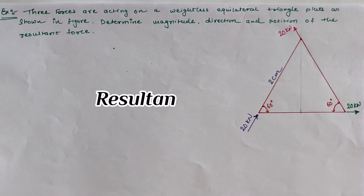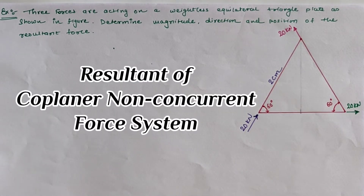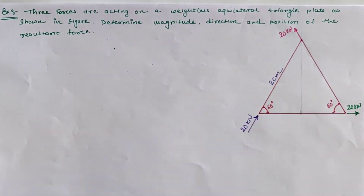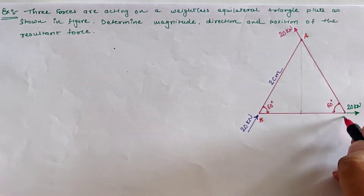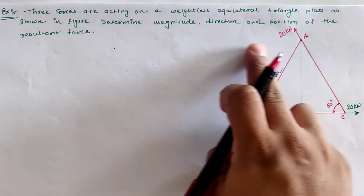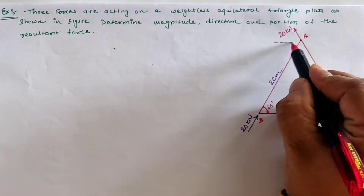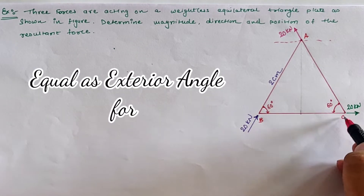Hello friends, today we are going to calculate the resultant of the given coplanar non-concurrent force system as shown in the figure. Observing the figure, we have an equilateral triangle with 60-degree angles at all corners. First of all, we have to resolve all these forces with respect to the horizontal as well as vertical axis. We notate the vertices as A, B, and C. If we draw a parallel line passing from location A in the direction of BC, then the 60-degree angle is with AC and B.